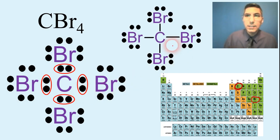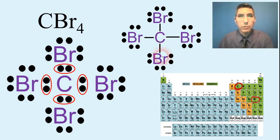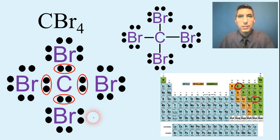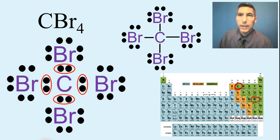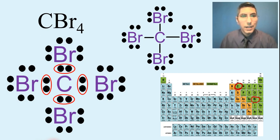This is the finished structural formula of carbon tetrabromide. We have four covalent bonds, one between each carbon and bromine.